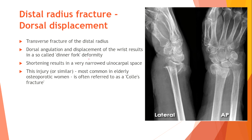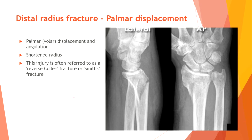Dinner fork deformity — because the hand of these patients looks like a dinner fork. Distal radius fracture with palmar displacement — palmar or volar displacement and angulation with shortening of the radius is often referred to as a reverse Colles' fracture or Smith's fracture.